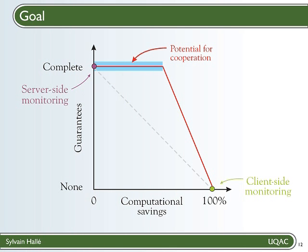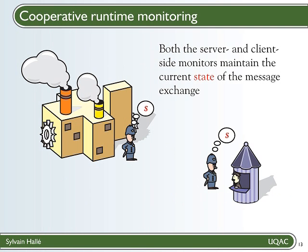Here's a sketch of how cooperative runtime monitoring works. You have two monitoring processes, one on the client-side and the other on the server-side. Remember that the interface contract relies on the notion of state of the protocol. So in the beginning, the client and the server processes maintain the current state of the message exchange, here S.